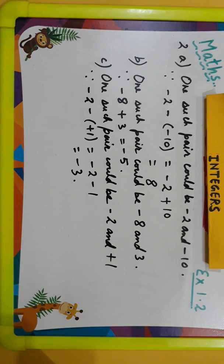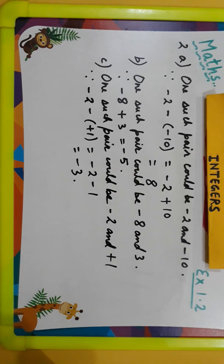After question number 2, let us move on to question number 3. In a quiz, team A scored minus 40, 10, and 0 in three consecutive rounds. There is one more team, team B, who scored 10, 0, and minus 40 in three consecutive rounds.